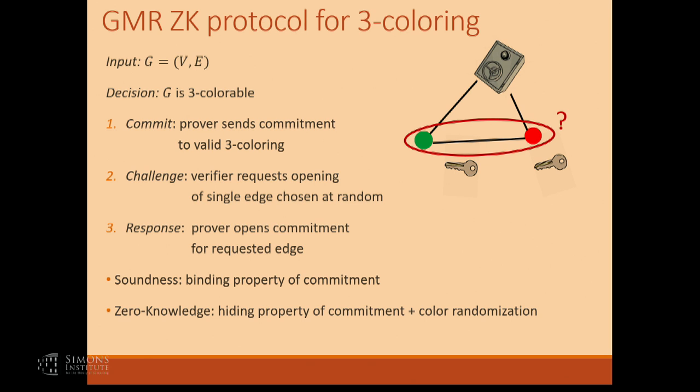So the prover, instead of committing to a specific coloring, commits to a random permutation of a specific coloring. When the verifier opens the edge, it doesn't learn anything about the original coloring that the prover had to find. So this is a perfectly zero-knowledge protocol. And now we want to try to do the same thing in the quantum case.